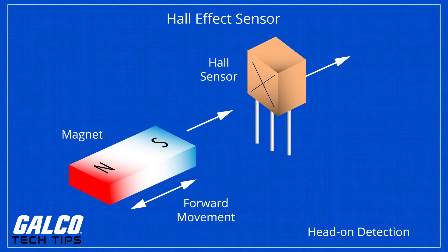Hall effect sensors can be thought of as being in a similar category as magnetic sensors, since they are devices that are attracted by external magnetic fields.